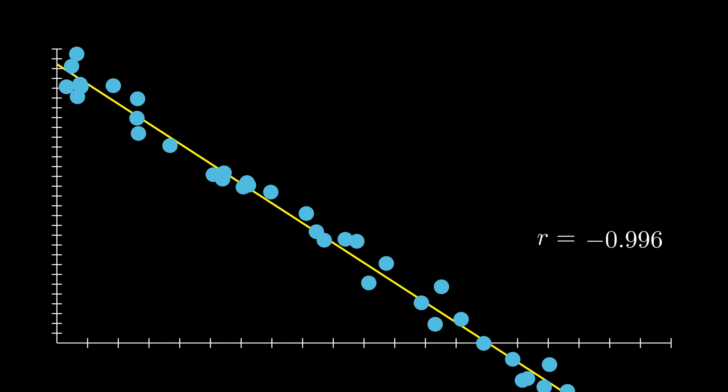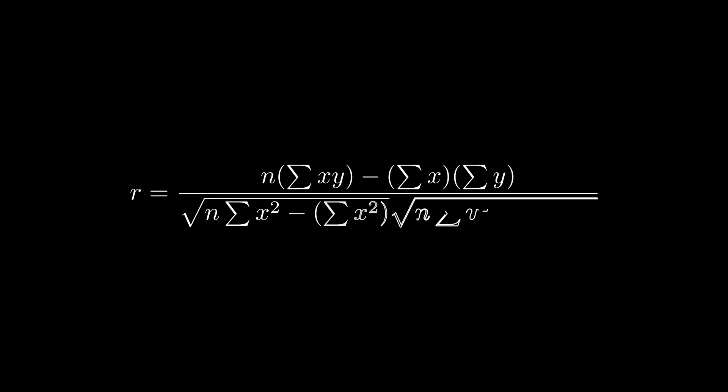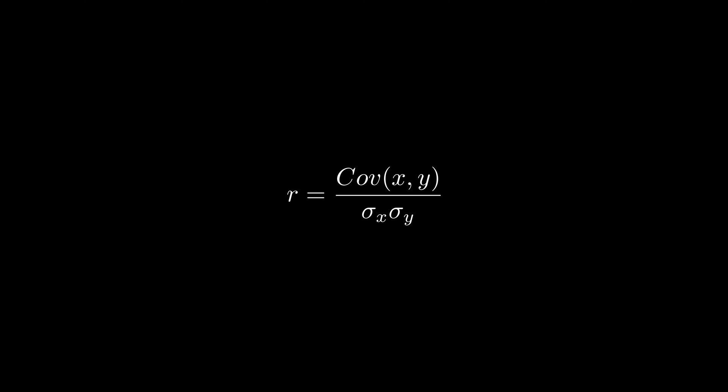There are different implementations of the correlation coefficient. When we are talking about a linear relationship, we use the Pearson correlation. It ratios the covariance between the two variables and their product of the standard deviations.